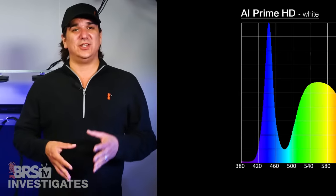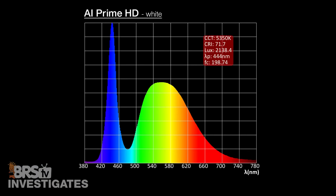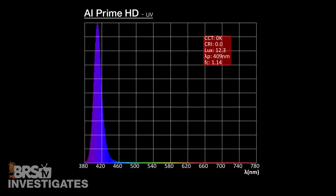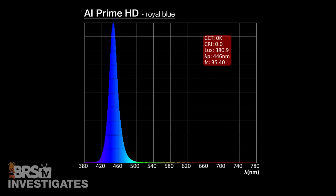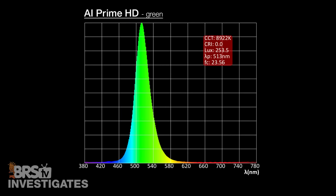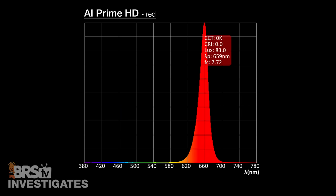Looking at each channel individually, the white channel has a strong peak around 440 and fills in the fuller spectrum many reefers will use to make the tank look a bit more natural. The near UV channel peaks around 410, violet 415, royal blue 450, blue at 470, green at 515, and the red right at 660.